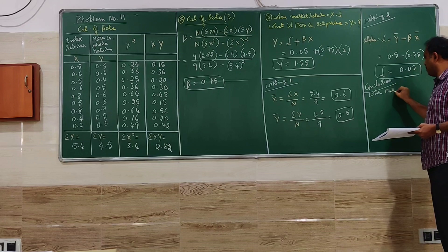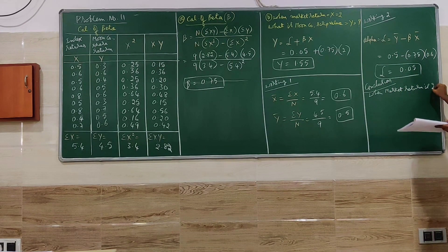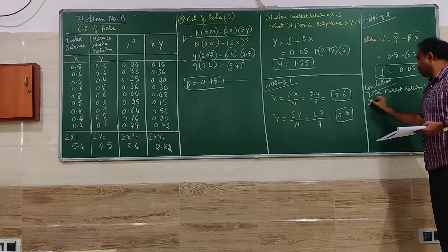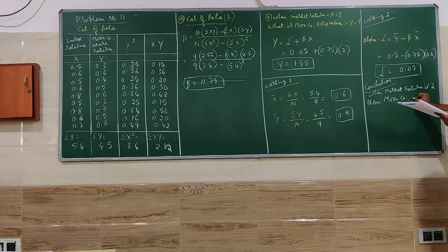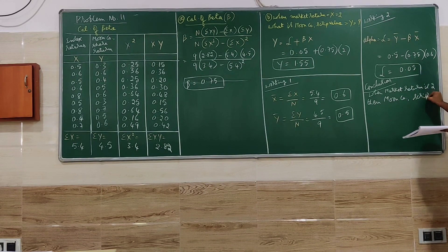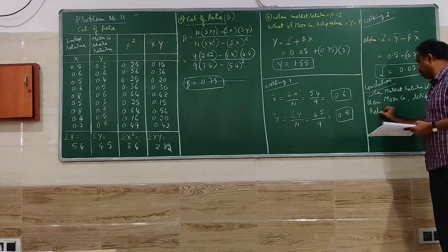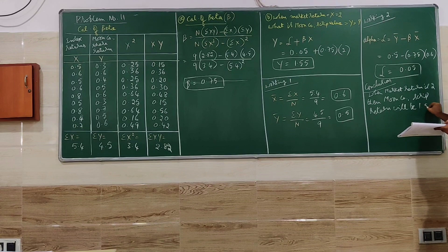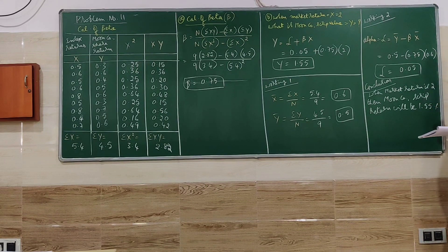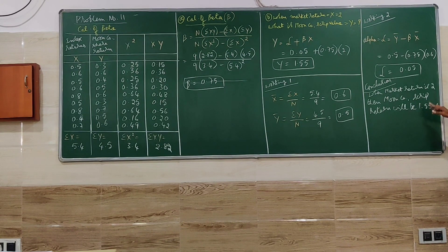When market return is 2, then moon company return will be 1.55 percent. So if the market return is 2, then moon company returns will be 1.55 percentage.